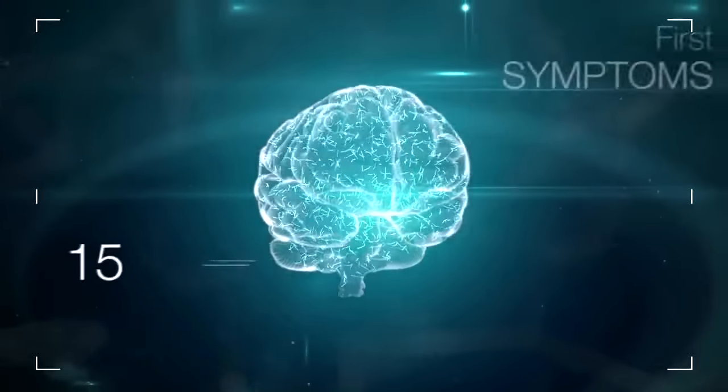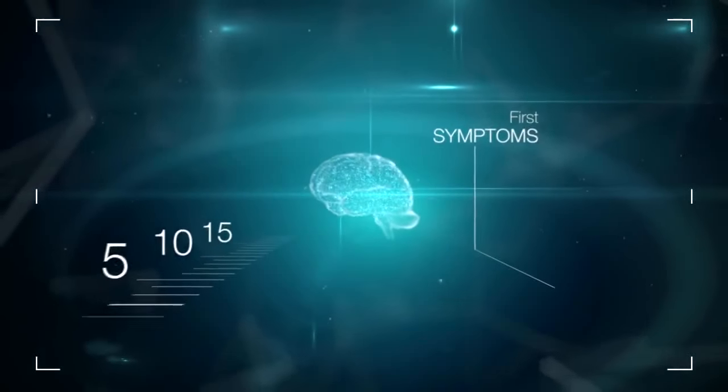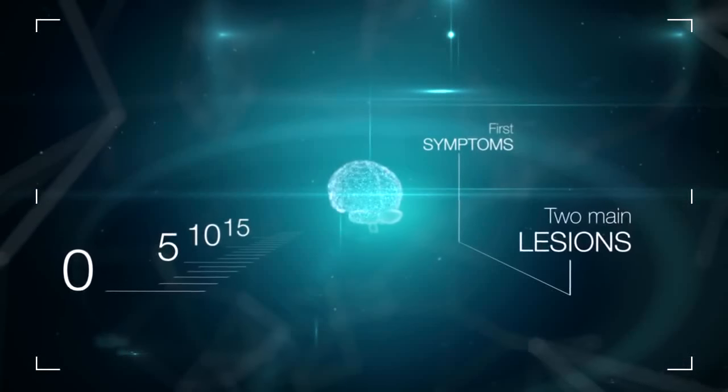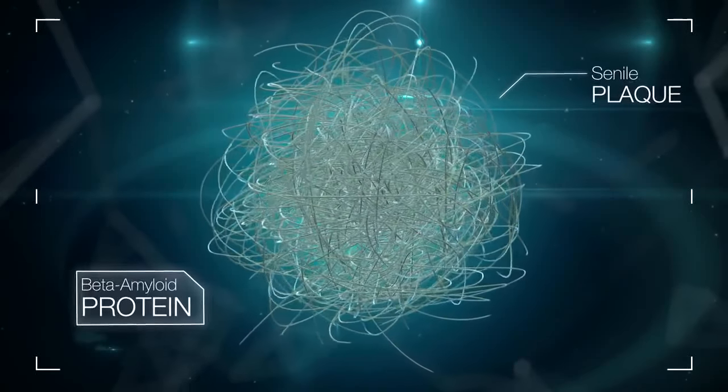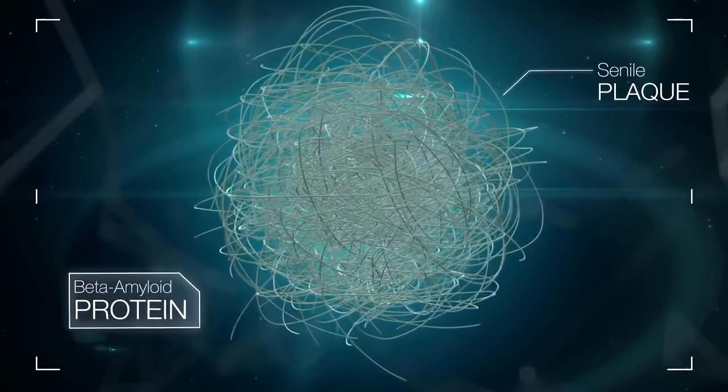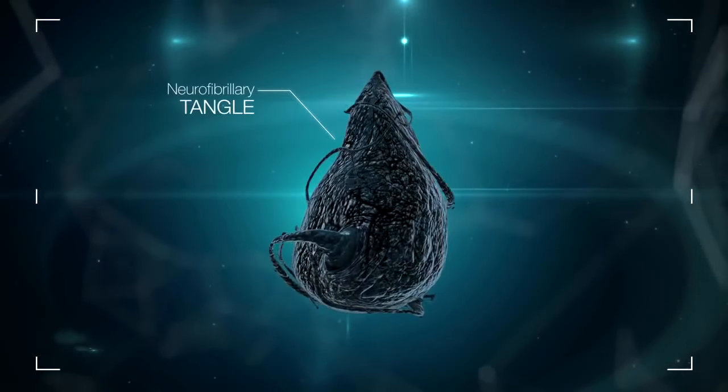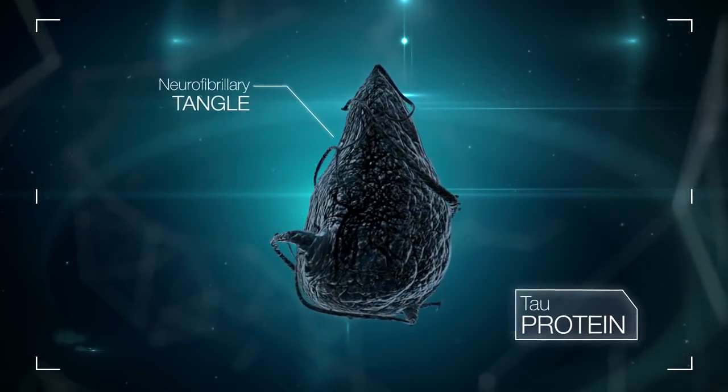In Alzheimer's disease, 10 to 15 years before the appearance of the symptoms, two main lesions form in the brain: senile plaques, composed of amyloid-beta protein, and neurofibrillary tangles, composed of tau protein.